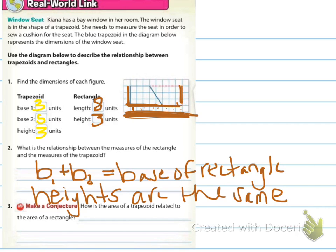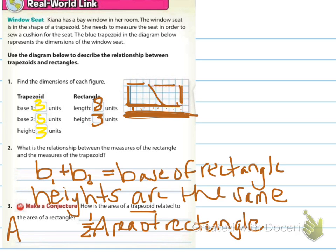And then it says, how is the area of the trapezoid related to the area of the rectangle? Remember that we've got two of them, two trapezoids here make up this one rectangle. So if I'm looking for the area of the trapezoid, it's one half the area of the rectangle. So the area of the trapezoid equals one half the area of the rectangle.